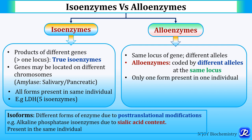Only one form is present in one individual. If any enzyme has different forms, only one form is present in one individual — contrary to isoenzymes where all forms are present in one individual. Here only one form is present in one individual, but all forms are seen in the total population.